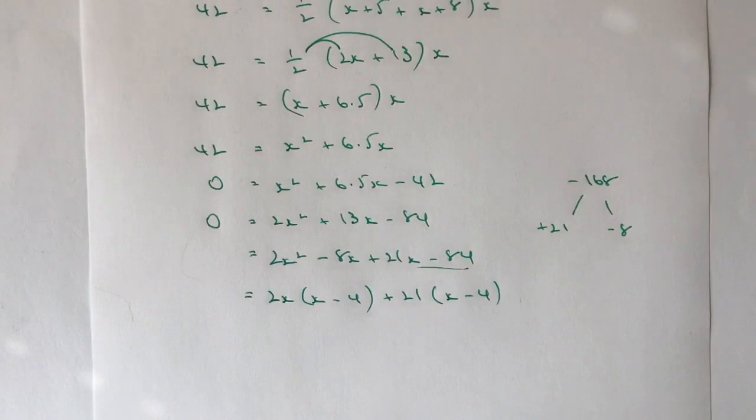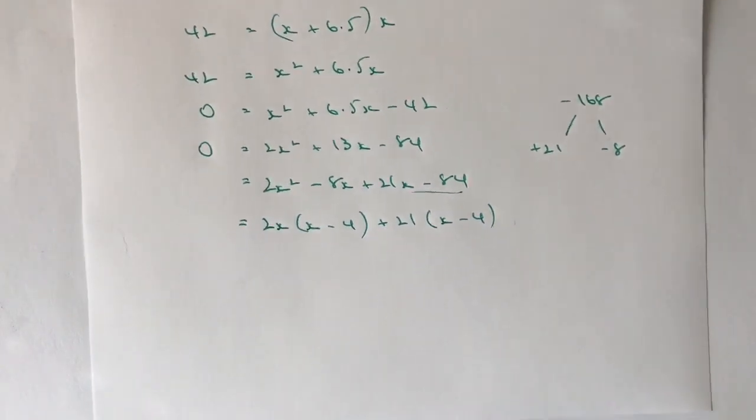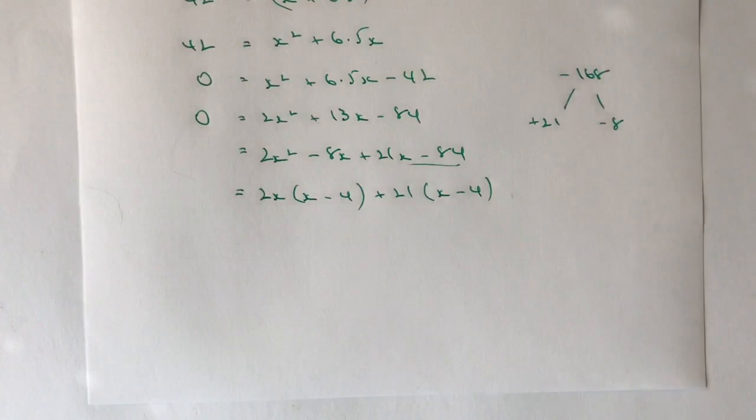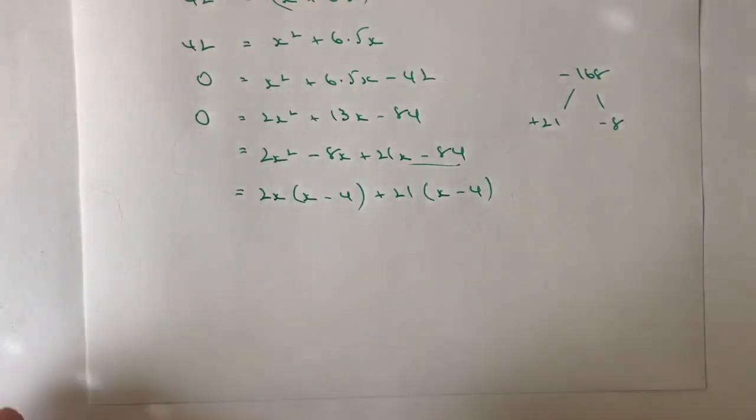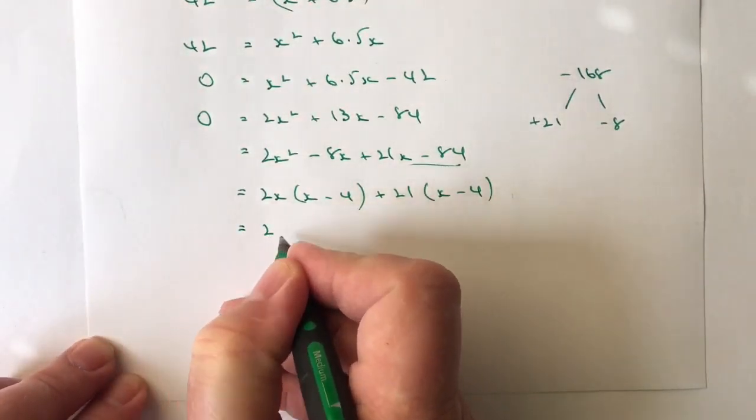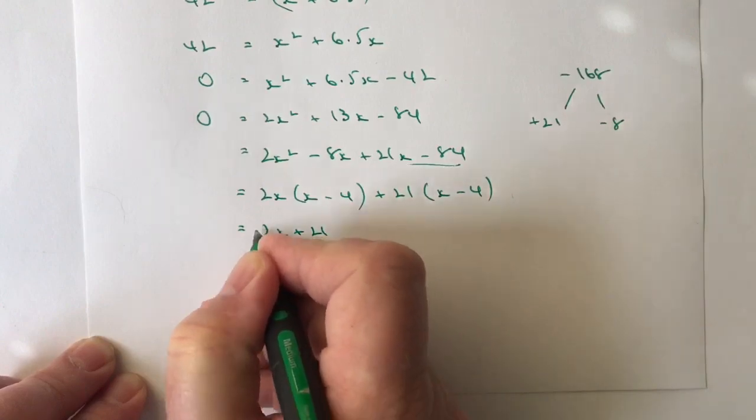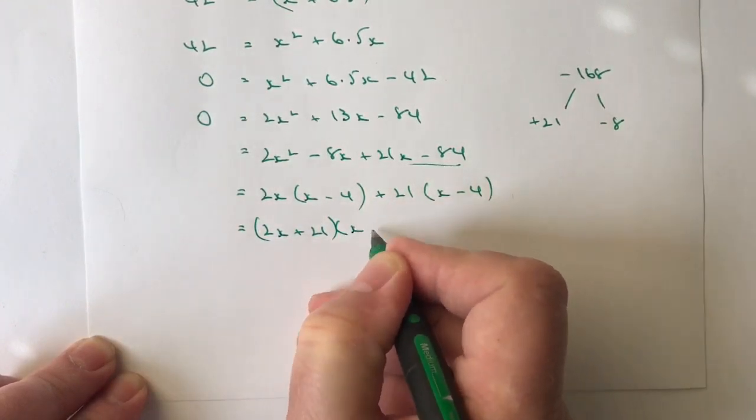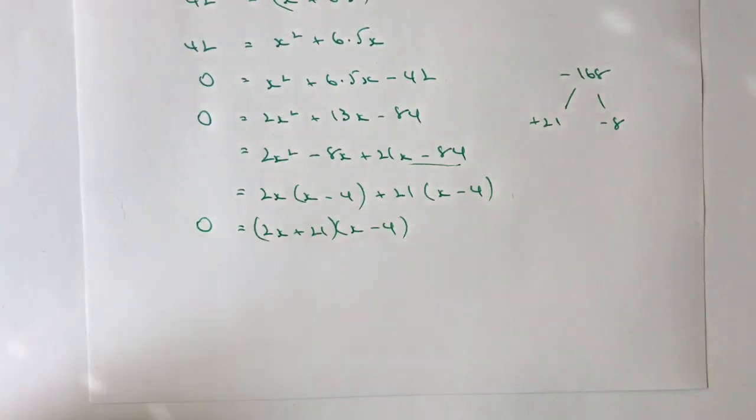So because I have those two common factors, what I can do now is I can bring them together. And I can write this as two bracketed terms of 2x plus 21 multiplied by x minus 4. Don't forget, that equals 0.